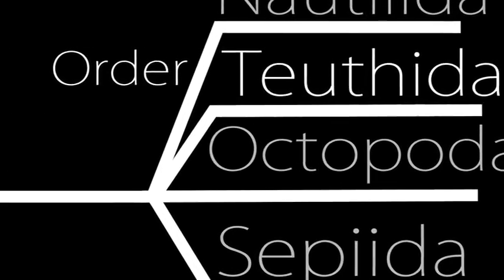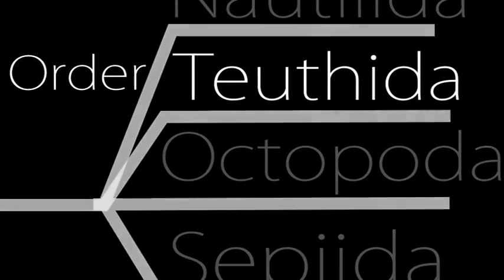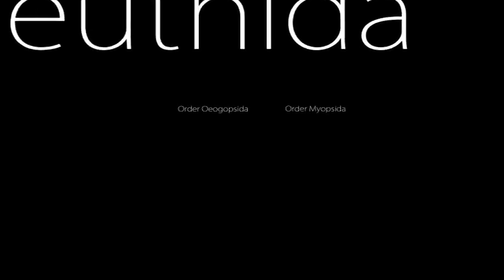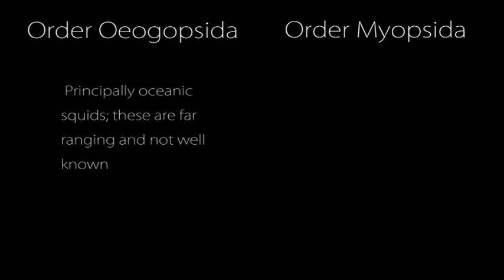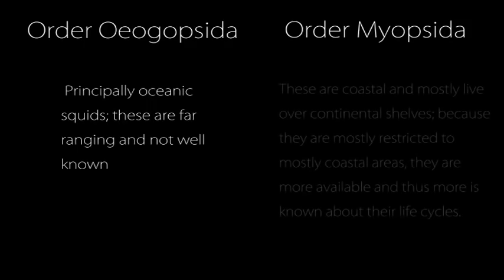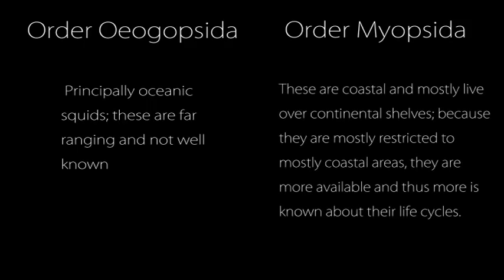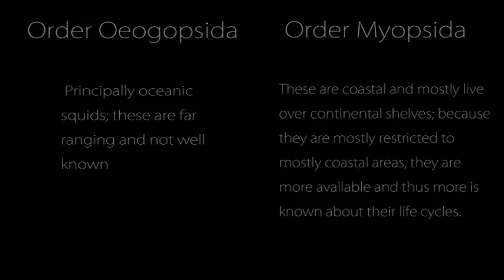And from there, the order Teuthida. These true squids, or free swimmers, have two suborders. Order Oegopsida — principally oceanic squids, these are far-ranging and not well-known. These include deep-sea squids and those in the pelagic zone. And order Myopsida. These are coastal and most live over continental shelves. Because they are restricted to coastal areas, much is known about their life cycle, and they are commercially fished.